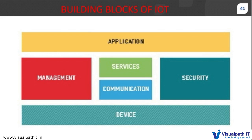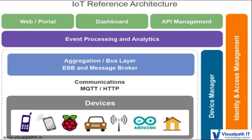Now we will see some building blocks of IoT. There are four blocks: first is sensors, second is processors, third is gateway, and fourth is application. When we say sensors, that means we are talking about the device layer. When we say processors, that means communication and servicing. Then comes the gateway for management and security, and lastly the applications. Each of these nodes has to have its own characteristics in order to form a useful IoT system.